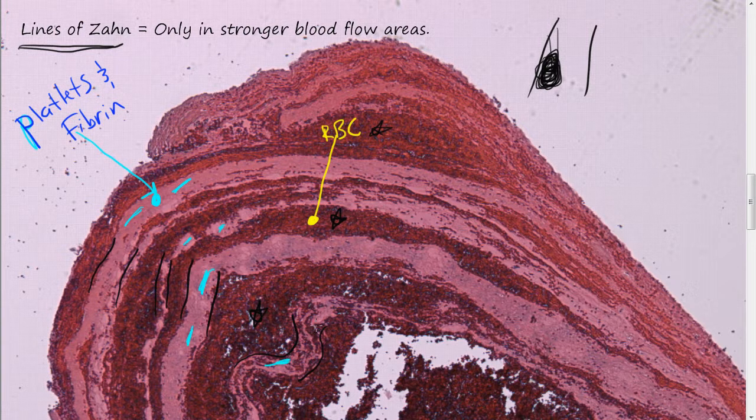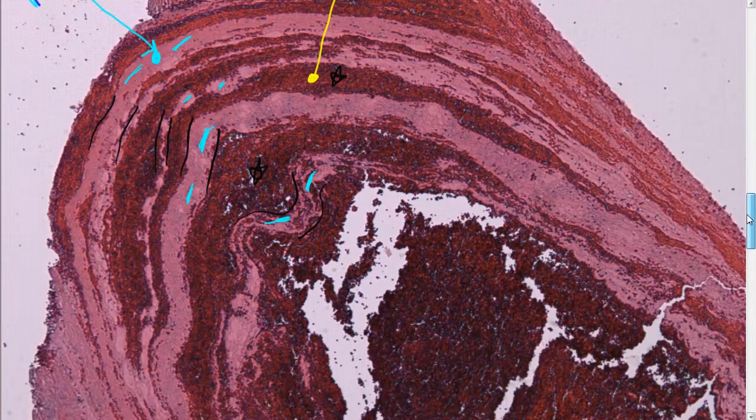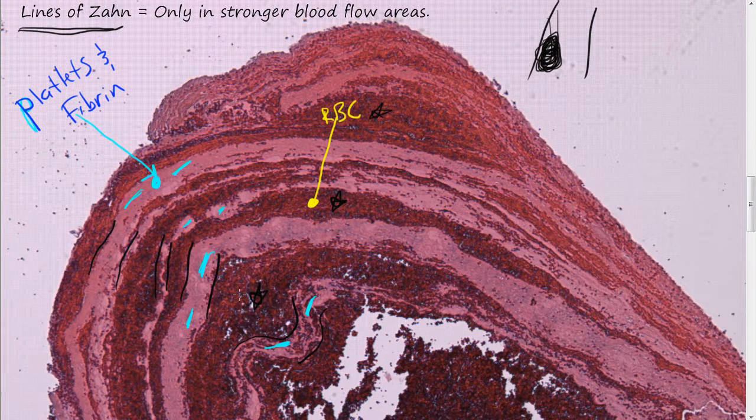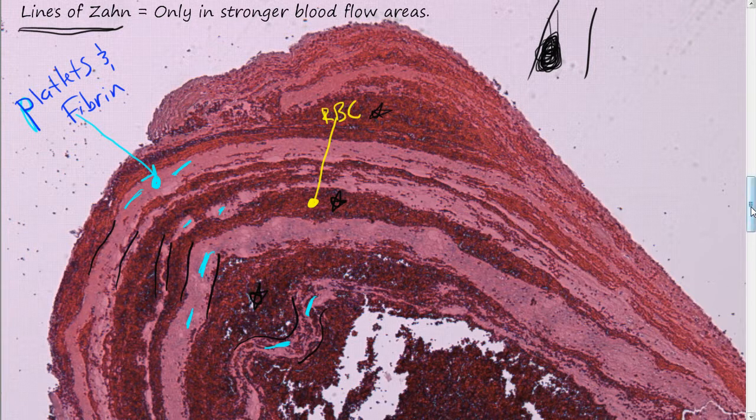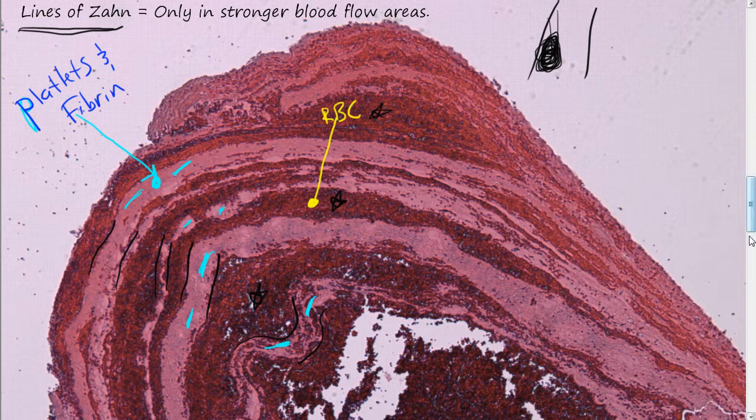This is good to know, especially in forensic pathology, when you want to know whether this thrombus occurred in this blood vessel before or after death. After death, you do not get these lines of Zahn in the arteries, in the areas of major blood flow. But you do get them before death. Lines of Zahn.